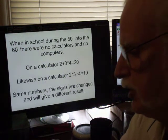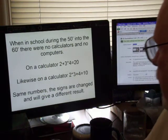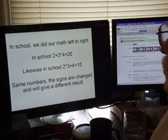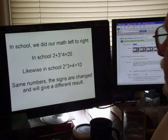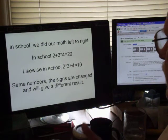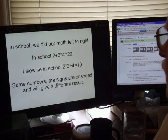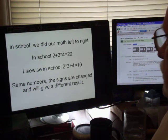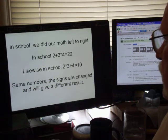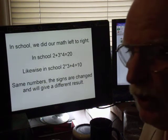However, with a spreadsheet it's a little bit more fixed than that. In school we did our math left to right. In school, 2+3×4 is twenty. Likewise in school, 2×3 would be six plus four equals ten.